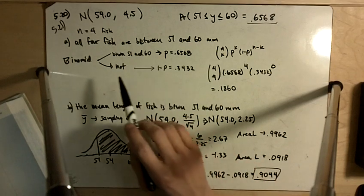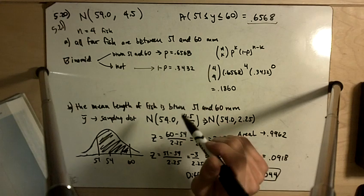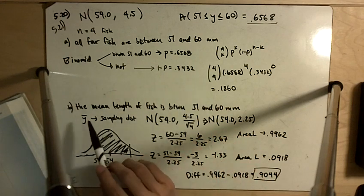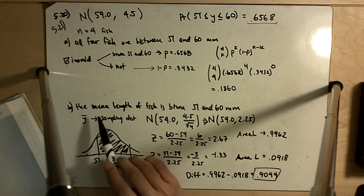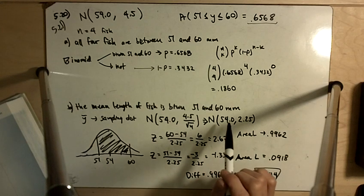And the answer is if all four fish are between 51 and 60 millimeters in length, then absolutely part B must also be true. The mean length of fish is going to be between 51 and 60 millimeters.